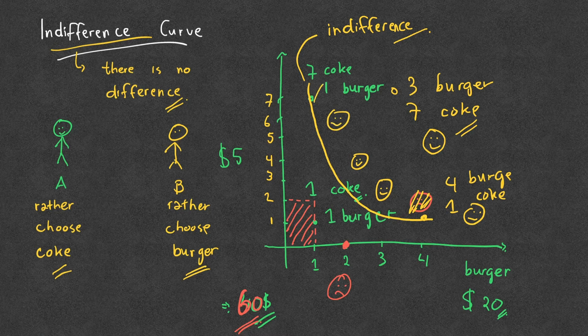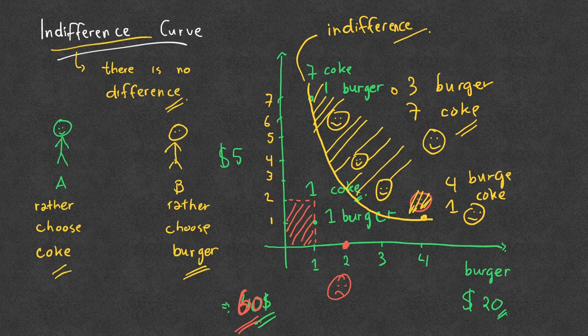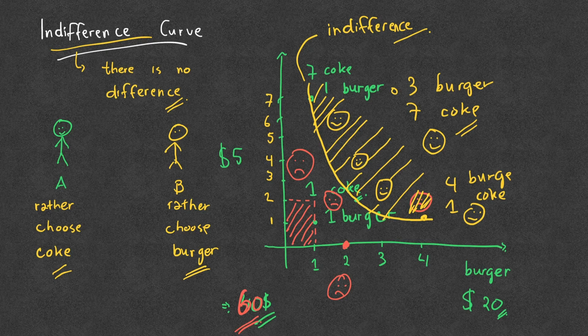At this level, you are happy. All these points — happy, happy, happy — represent your preferences. All of them make you happy. Below this level, you are unhappy and you want to avoid it. In the next lesson we'll talk about where the happy region and the unhappy region meet, and why the curves look like a curve instead of a straight line.